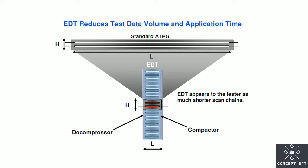In the figure we can see at the top, standard ATPG, where H is the number of input channels and L is the longest chain length. At the bottom, UDT is shown, where H means number of input channels and L means length of the longest chain. For both standard ATPG and UDT, the number of input channels is the same — but in UDT, the length of the longest scan chain is smaller.